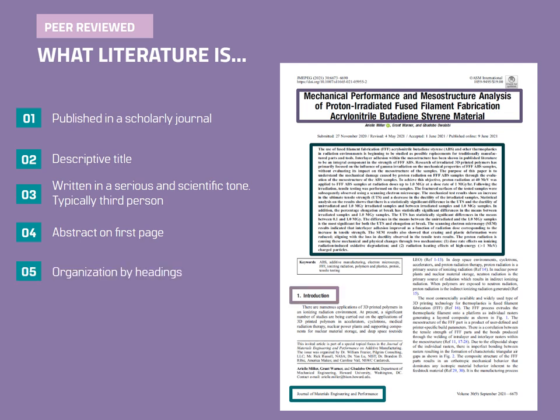Journal articles are organized by headings. Typically, those headings include an introduction, theory or background, literature review, methods, discussion, results, and conclusion. Sometimes there will also be a section labeled future work, where the researcher outlines what they believe are the next steps in the research that need to be done, whether by them or another researcher. Other times this will be included in the conclusion section. However, there are times where the article does not explicitly discuss future work, and you must deduce what comes next based on what they studied and what they excluded.